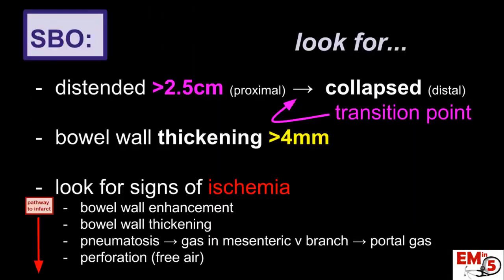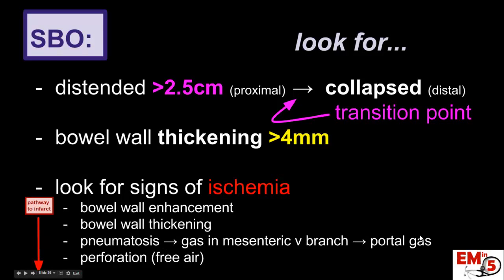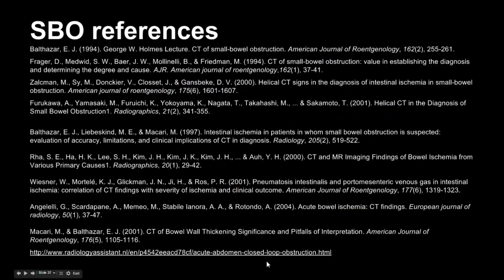To review: for an SBO, we're looking for distended proximal bowel greater than 2.5 centimeters, and the helpful finding of collapsed distal bowel. For bowel wall thickening, you're looking for greater than 4 millimeters. Once you've diagnosed the SBO, you need to look for signs of ischemia — bowel wall enhancement or thickening, pneumatosis, portal gas, or eventually free air from perforation. Thanks for joining us on EM in 5.